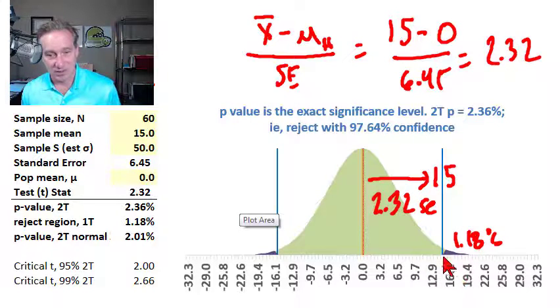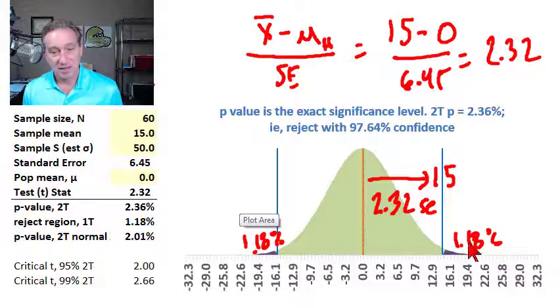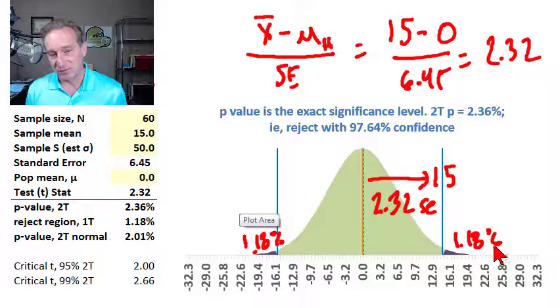And that's because we have 1.18% over here in this rejection region that I colored in purple, and 1.18% in this rejection region on the other side. They total 2.36%.